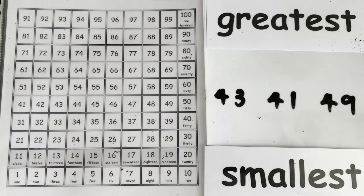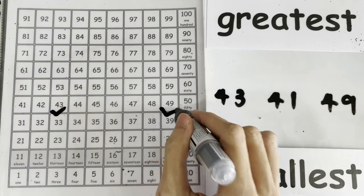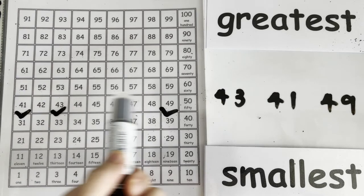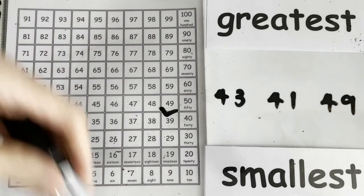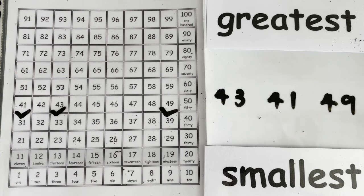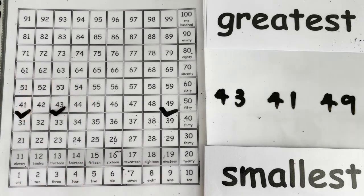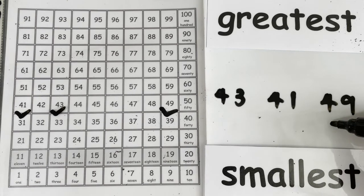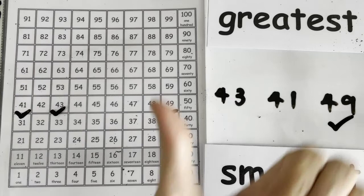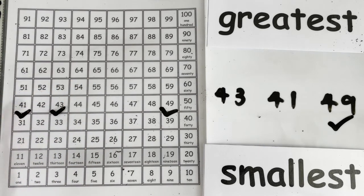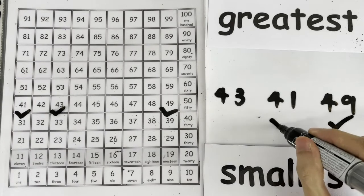What happens when all the numbers look like this? Let's find out which is the greatest and smallest. Let's find 43, 49, and 41 on the chart. They are all on the same line — none of them are high and none of them are low. So when all of them are the same, we look at the numbers to the right, because going right means bigger and greater. So the greatest number is 49. And which is the smallest? Going to the left means smaller and smaller, so the smallest number over here is 41.